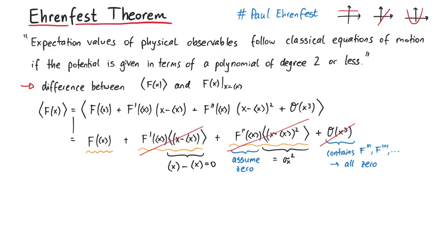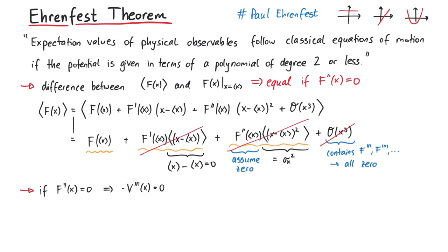So if we assume that the second derivative of the force is zero, all higher derivatives will also be zero, and then the expectation value of the force would be equal to the force evaluated at the expectation value of the position operator — which means that the quantum mechanical operators actually do fulfill classical equations of motion. But again, this is only true if the second derivative of the force vanishes. Finally, let us investigate what this condition means: if the second derivative of the force vanishes, then the negative third derivative of the potential must vanish.